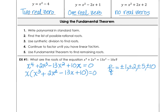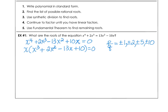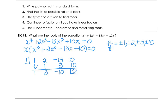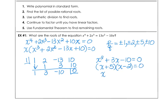We'll divide using synthetic division, first trying positive 1. We're looking at the cubic: 1x³ + 2x² − 13x + 10. Using synthetic division, we find a zero at 1. Then we take the depressed polynomial x² + 3x − 10, set it equal to zero. Factors of 10 that add up to positive 3 are 5 and negative 2, giving zeros at negative 5 and positive 2.